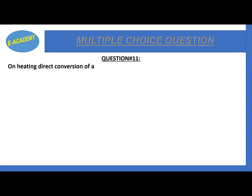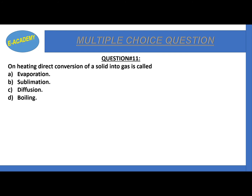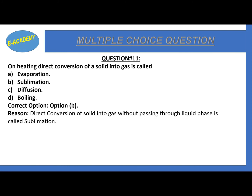Question number 11: on heating, direct conversion of solid into gas is called evaporation, sublimation, diffusion, or boiling? When a substance in solid form directly converts into vapor or gas, that process is called sublimation. The correct option is B. Direct conversion of solid into gas without passing through a liquid phase is called sublimation.